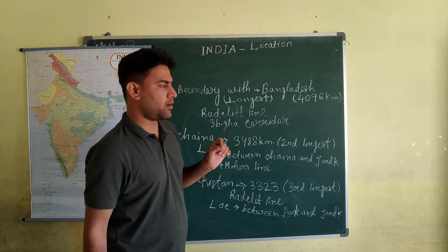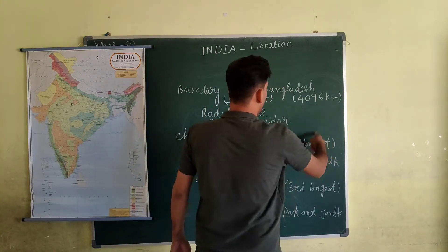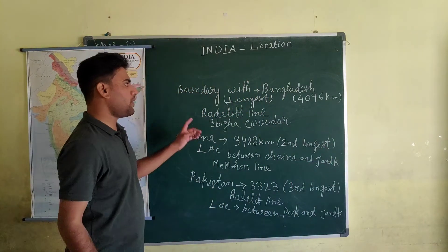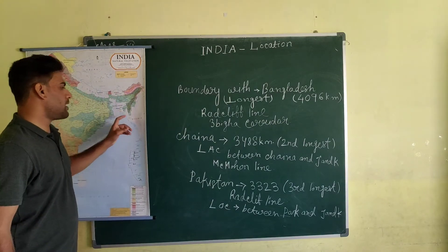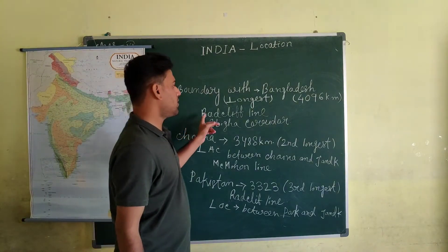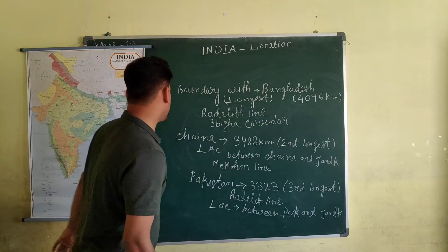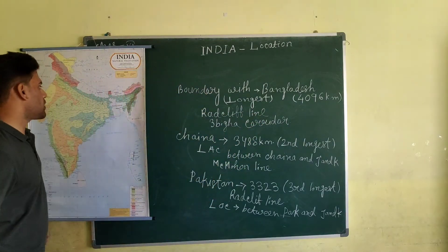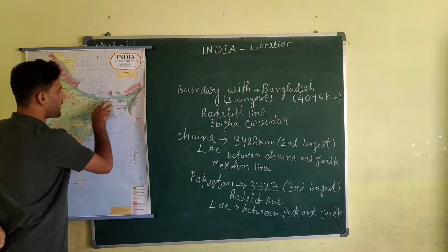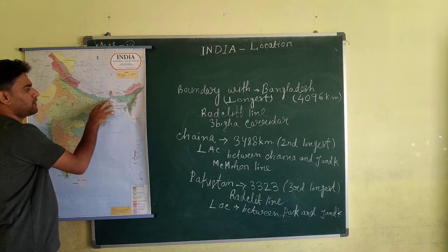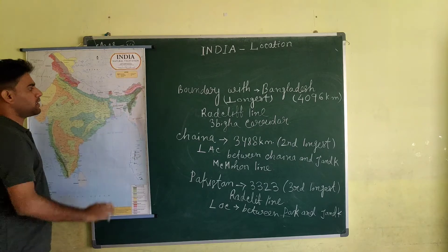The India-Bangladesh border is about 4,096 km and is also known as the Radcliffe Line. There is also a portion here known as the Siliguri Corridor, or Chicken's Neck corridor.